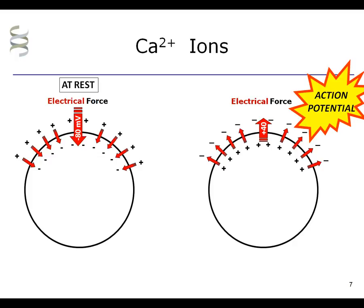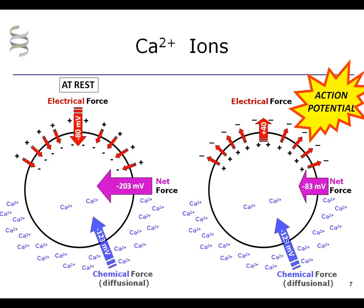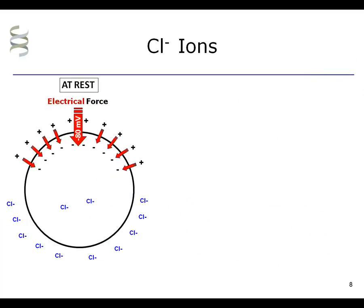For calcium ions, the net force is always inward, again because the chemical force inward is always so strong. This means that calcium channel activity tends to depolarize the cell, and calcium channel blockers tend to reduce excitability.